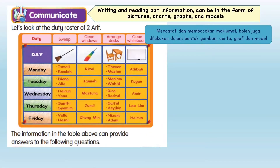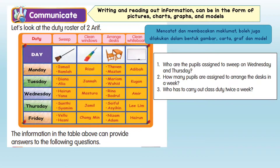Let's look at the duty roster of 2 Arif. The information in the table above can provide answers to the following questions. Question 1: Who are the pupils assigned to sweep on Wednesday and Tuesday? They are Harun, Yana, Santi and Syamin. Question 2: How many pupils are assigned to arrange the days in a week? 10 pupils are assigned to arrange the days in a week.